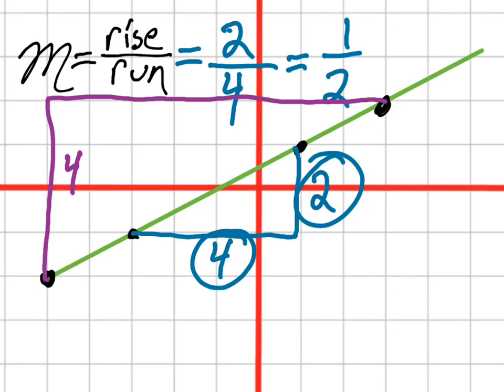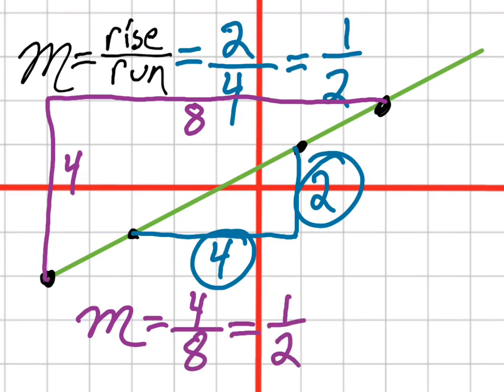And so M in this case, the rise is 4 and the run is 8 which also equals 1 half, which is exactly as we expected because the steepness of a line does not change along the graph. Well let's take a look at another example.